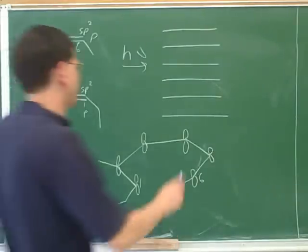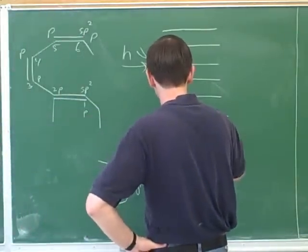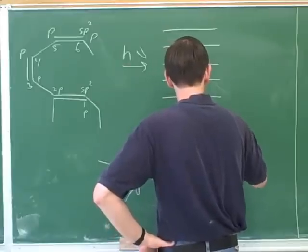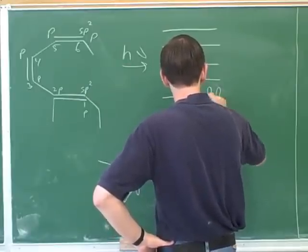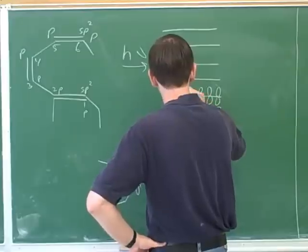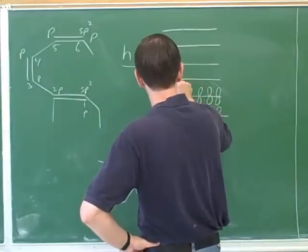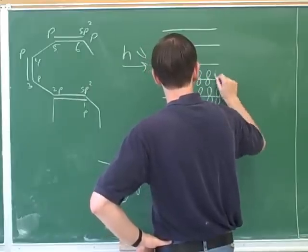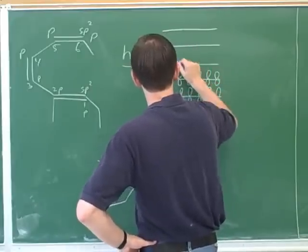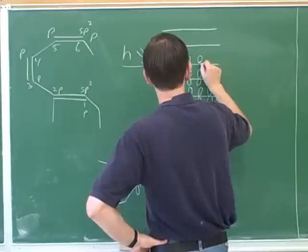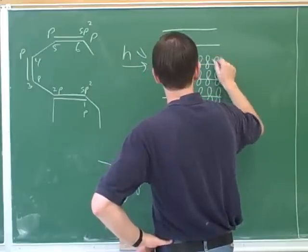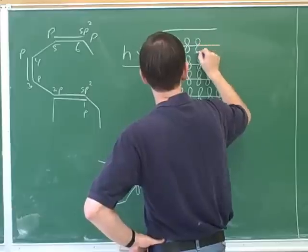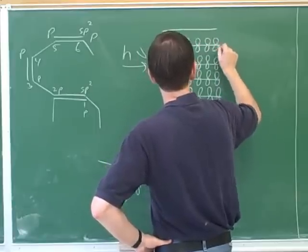Each of those levels is formed by the overlap of the six p atomic orbitals.